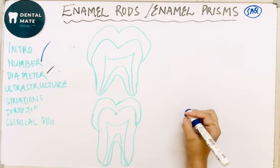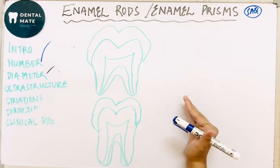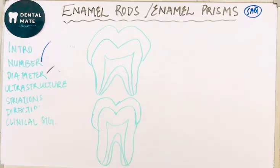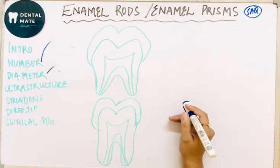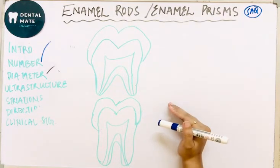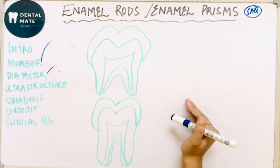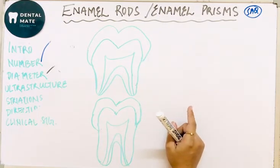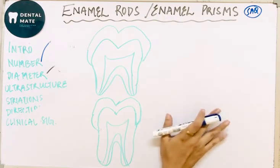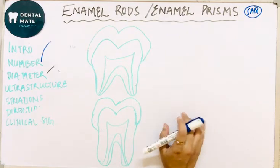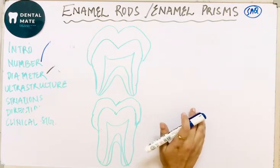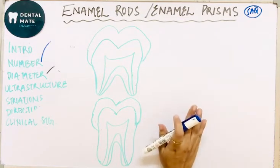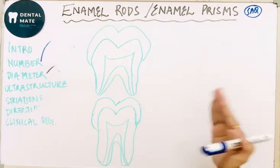Regarding the direction of enamel rods — the direction is determined by the movement of secretory ameloblasts, which secrete the mineralization compounds. Whichever direction the secretory ameloblasts move, that dictates the orientation of the enamel rod in the mature enamel. The enamel rods are set in rows arranged circumferentially along the long axis of the tooth.